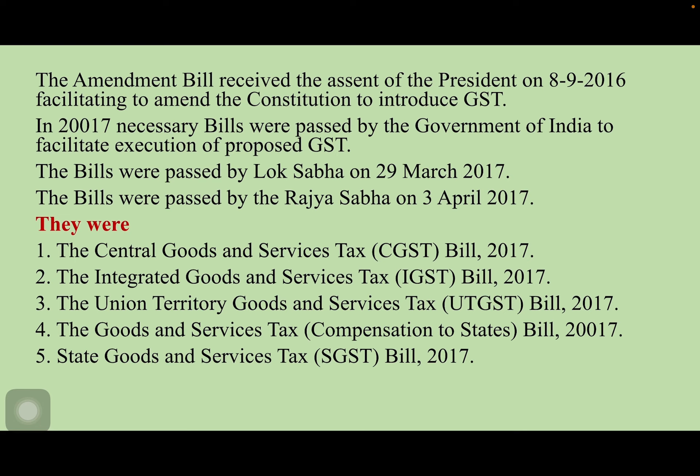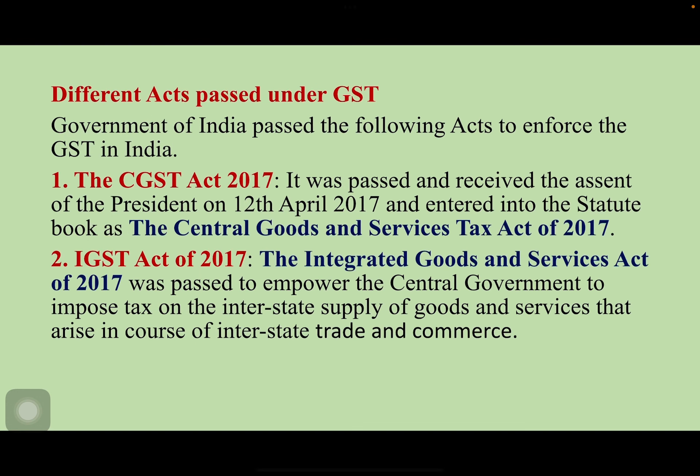In 2017, necessary bills were passed by the government to facilitate execution of the proposed GST. The bills were passed by Lok Sabha on 29th March 2017 and by Rajya Sabha on 3rd April 2017. These bills were: the Central Goods and Services Tax Bill, the Integrated Goods and Services Tax Bill, the Union Territory Goods and Services Tax Bill, and the State Goods and Services Tax Bill.